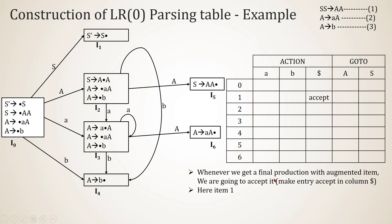Whenever we get a final production for the augmented item (S' → S•), we make an accept entry under the dollar column. So in row 1, under dollar, we write accept.